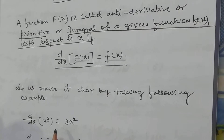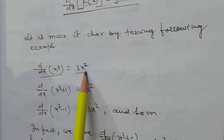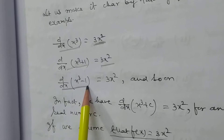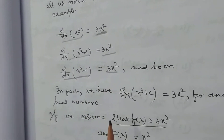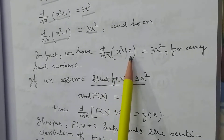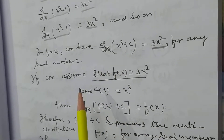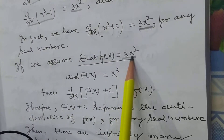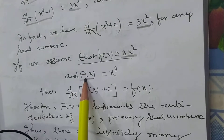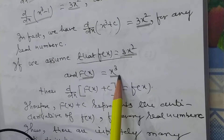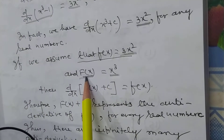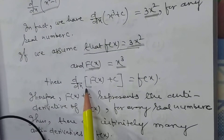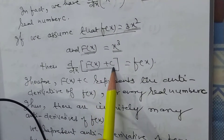Let's understand it by example. The d/dx of x³ is 3x², d/dx of x³+1 is 3x², and d/dx of x³−1 is 3x², and so on. In fact, d/dx of (x³ + c) equals 3x² for any real number c. We assume f(x) = 3x² and F(x) = x³. So d/dx of F(x) + c equals f(x).